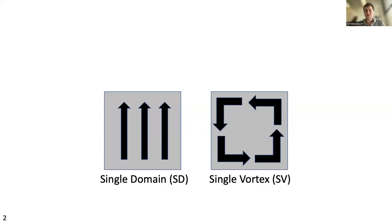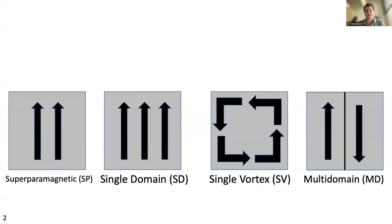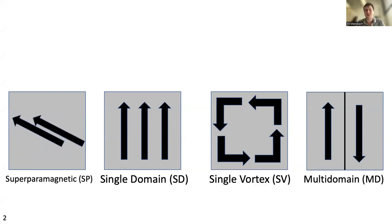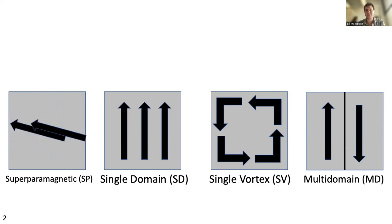Often our preference is for these recorders to be in the single domain state, since we know how to recover reliable paleointensities from these recorders and we know how to remove their overprints. In the past few years we also noticed that we really like it if our grains are in the single vortex domain state, as these domain states have very extremely stable magnetizations and have expanded the sizes of grains that can be high-quality recorders.